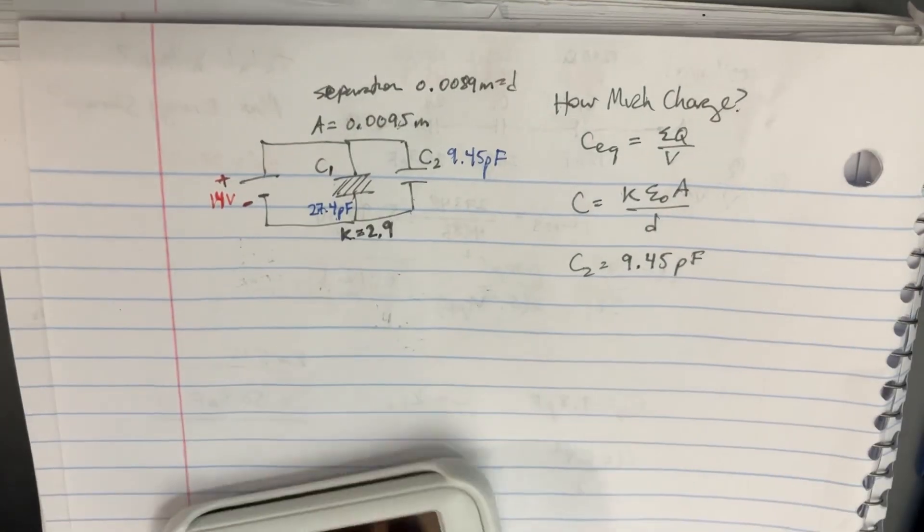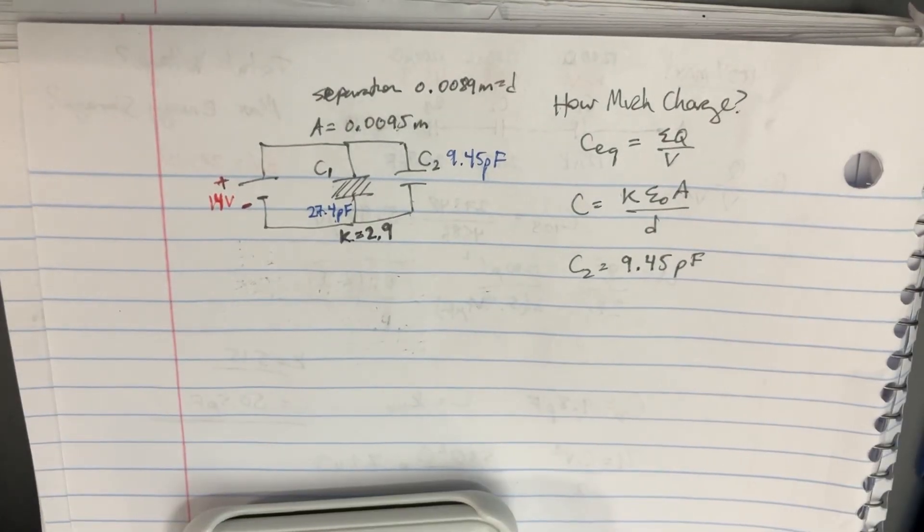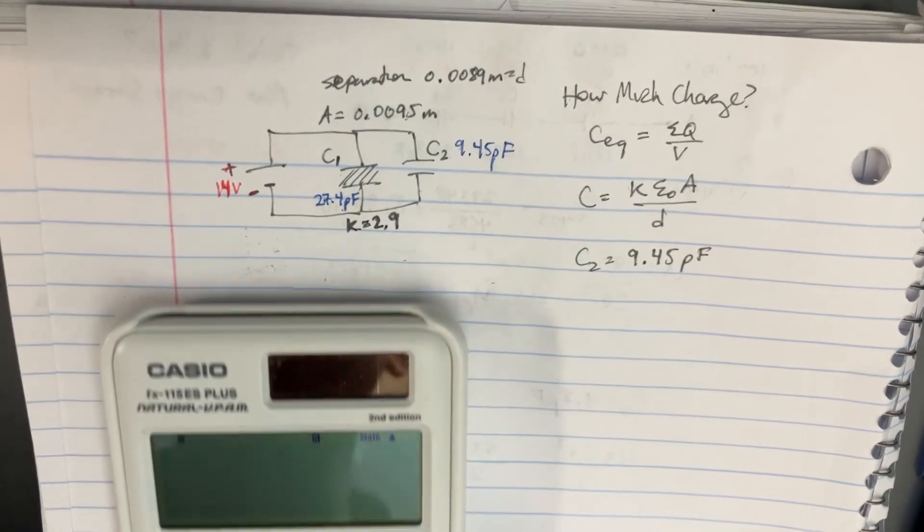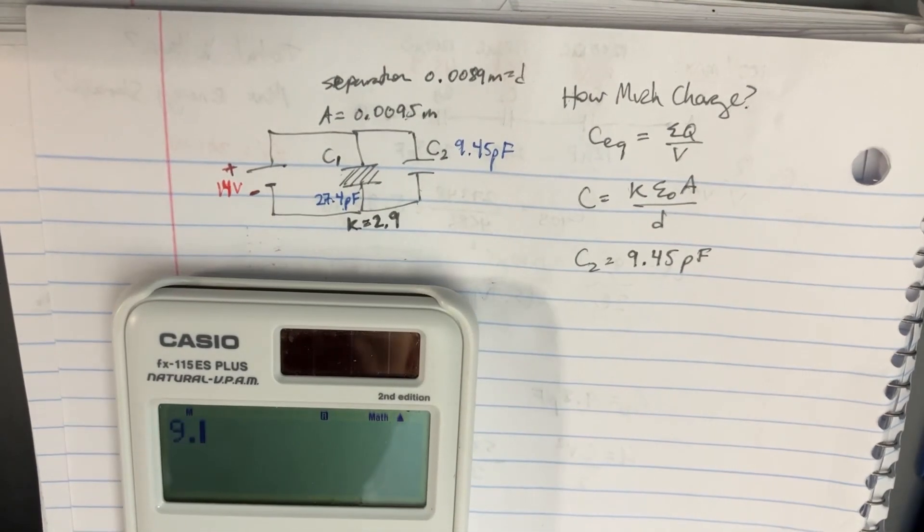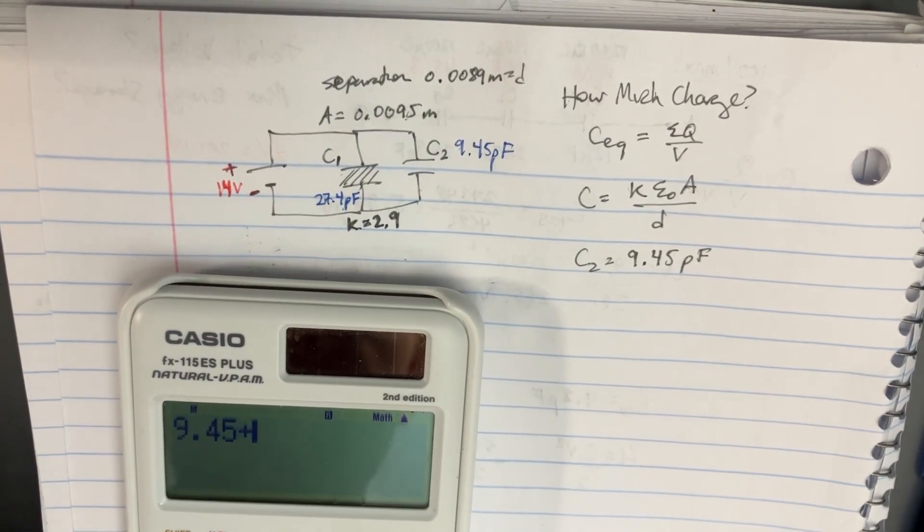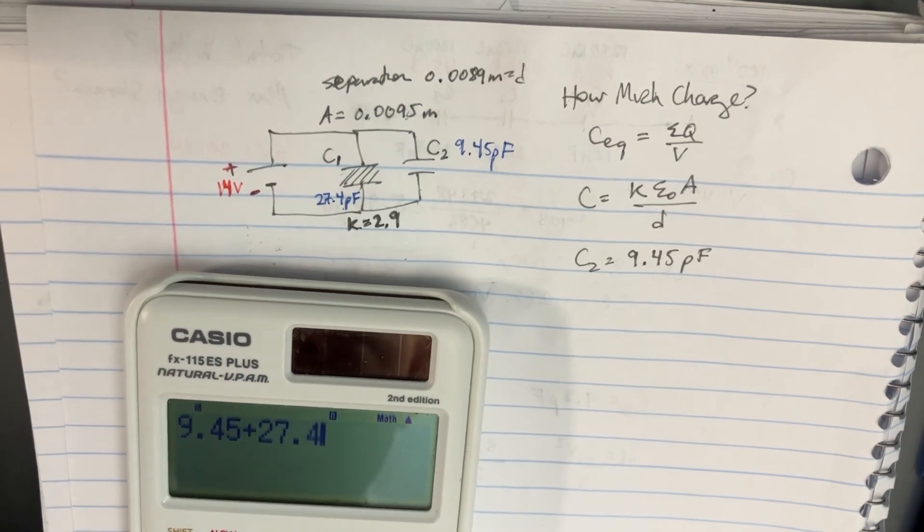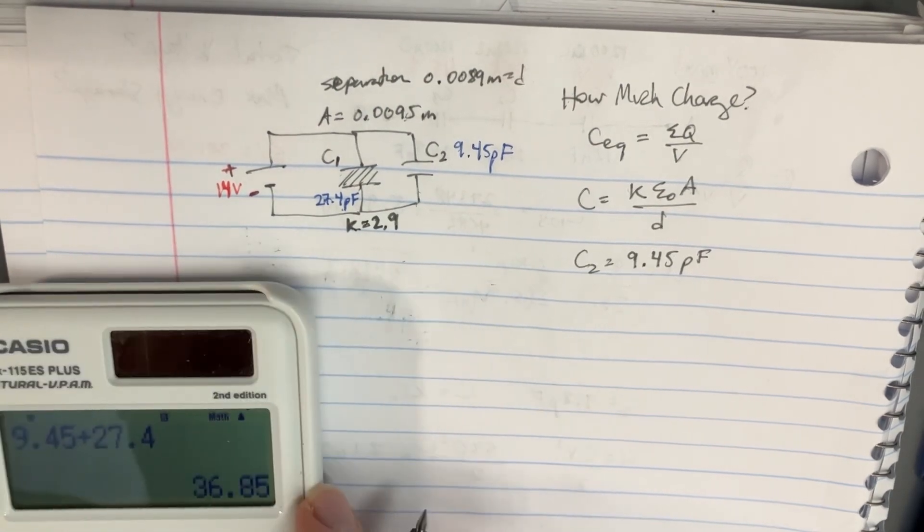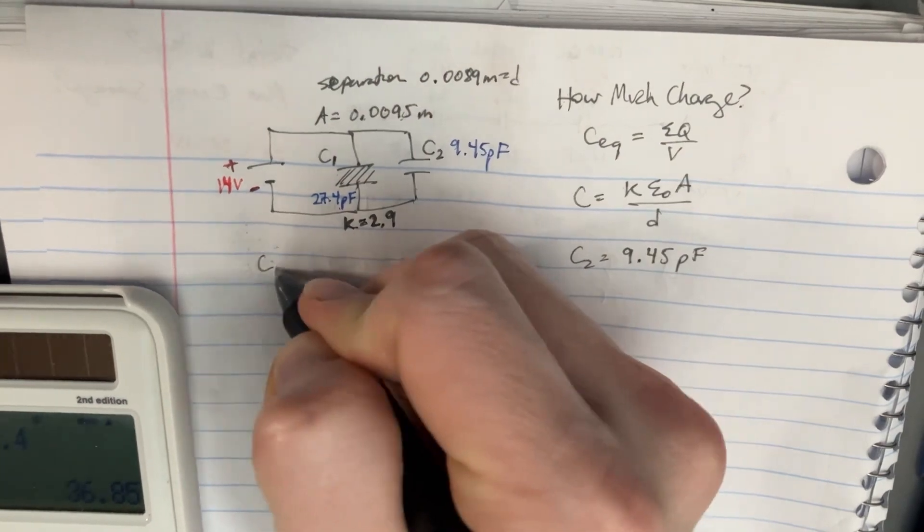So because these two capacitors are in parallel, that means we can add them together: 9.45 plus 27.4 gives us 36.85 picofarads.